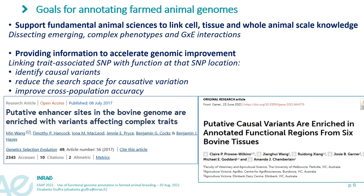Here are two examples from the bovine genomics community. On the left, SNPs in candidate bovine enhancer regions marked by specific histone modifications were found enriched for association with milk production traits. More recently, on the right, functional regions of the genome were specifically studied by assaying histone modification and one transcription factor in six tissues, leading to the identification of enriched putative causal variants in these regions in lactating dairy cows.